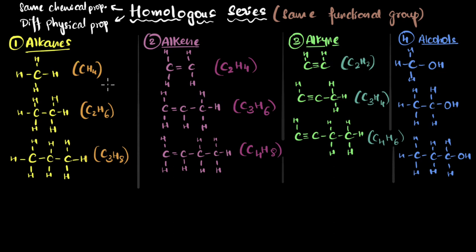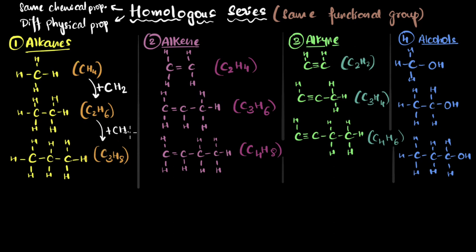Let's look at some more features. If I go from one member to the next member, you can see that the carbon atom increases by one — one extra carbon atom — but there are two extra hydrogen atoms. So you have a plus CH₂ when you go from one to the next. And it's the same going from the next member to the one after. Why don't you pause the video and check for alkenes, alkynes, and alcohols as well?